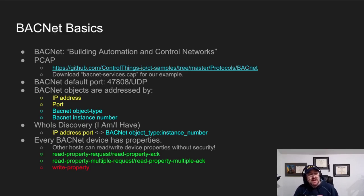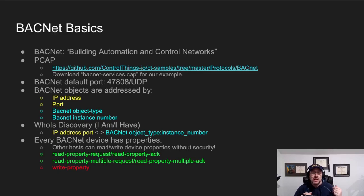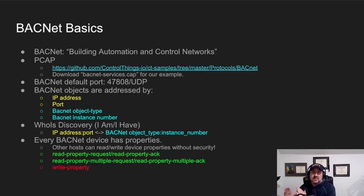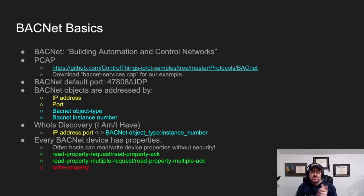In BACnet, there's a WhoIs discovery protocol that happens, kind of like ARP. There are WhoIs, IAm, and IHave messages, and the purpose of this protocol is to map the IP address and port to the BACnet object type and instance number pair. I'm going to show you examples of that in some Zeek logs coming up.